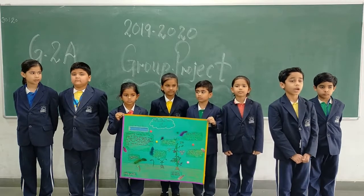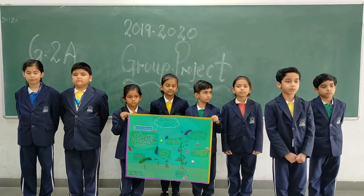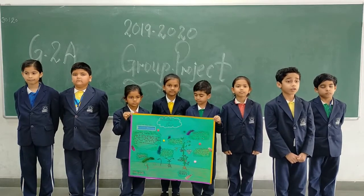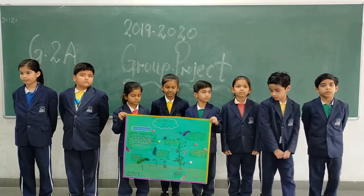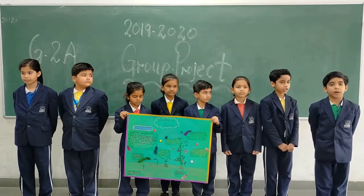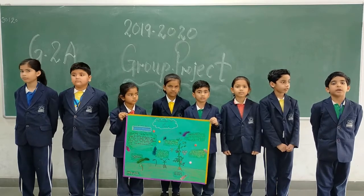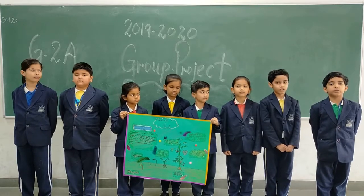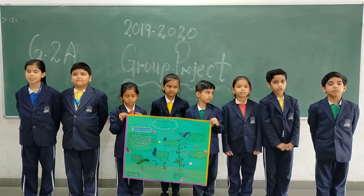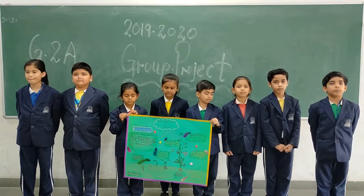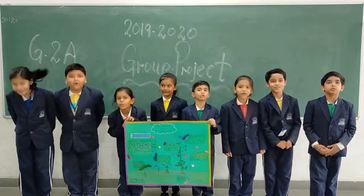Flowers are colorful and fragrant to help attract insects which aid in pollination. Flowers can produce the seeds or the fruits of the plant. The fruit is the part of the plant that contains seeds. When animals eat fruit, they scatter seeds on the soil from which more plants grow. Thank you!